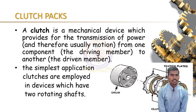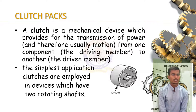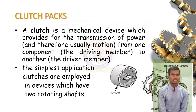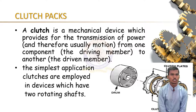A clutch is a mechanical device that engages and disengages power transmission. In its simplest form, a clutch connects and disconnects two rotating shafts — a drive shaft and a driven shaft. In these devices, one shaft is typically attached to the engine and the other to the power unit, while the other shaft provides output power.